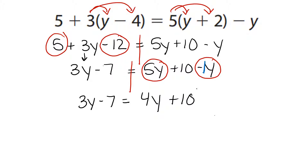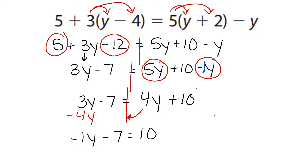Now we have combined all of our like terms that are on the same side. Step 3 tells us to combine like terms on opposite sides. My like terms are 3y and 4y — 3y is on the left, 4y is on the right. To combine like terms on opposite sides, we have to do the opposite operation. So we're going to take this 4y and move it over to the 3y — instead of 4y, we do a minus 4y. 3 minus 4 gives us negative 1y. I bring down the minus 7 and the 10.